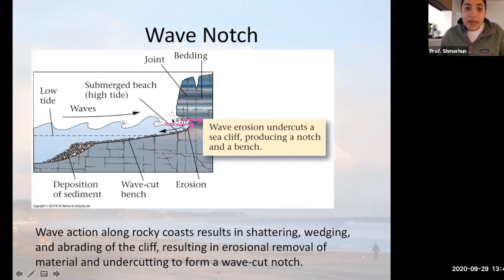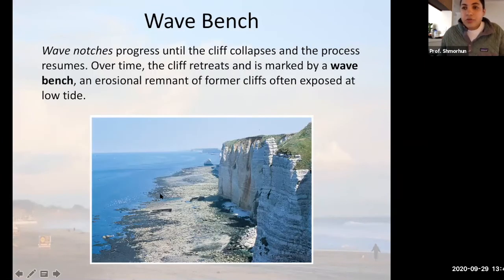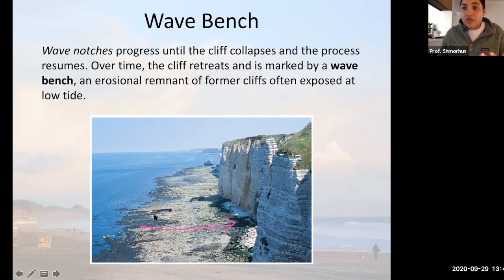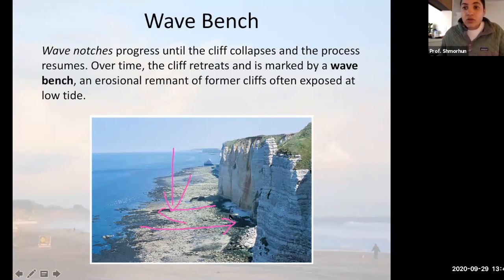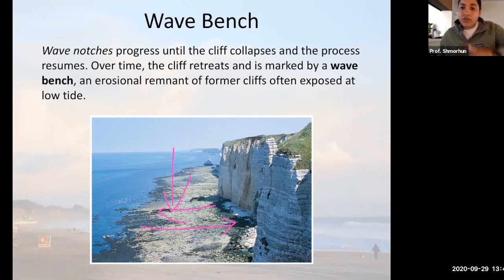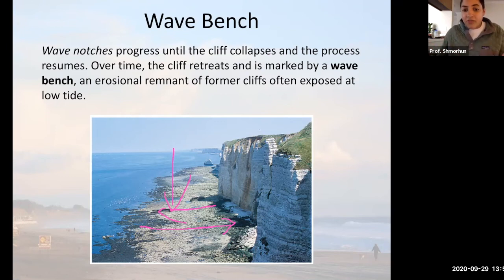You can then progress through that same timeline again, producing another wave notch. Through time, as wave action continues, the waves cut further. Eventually, you produce a wave bench, which is essentially a record of where these wave notches were once created — the sea cliffs collapsed in on themselves, material was eroded and pulled out. Wave benches are usually exposed at low tides. As this cycle of notch formation and cliff collapse repeats, the cliff retreats through time, producing the wave bench.